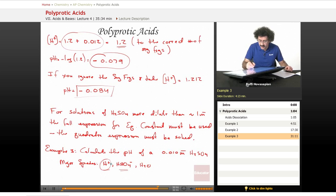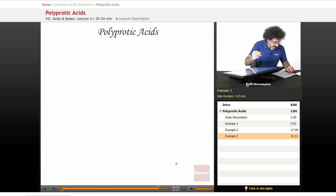This is 0.01 molar because it's fully dissociated. The final hydrogen ion concentration is going to be 0.010 plus X, where X is the hydrogen ion concentration we get from the dissociation of HSO4-. That's the equilibrium we want to look at.